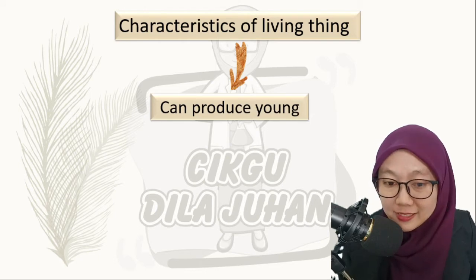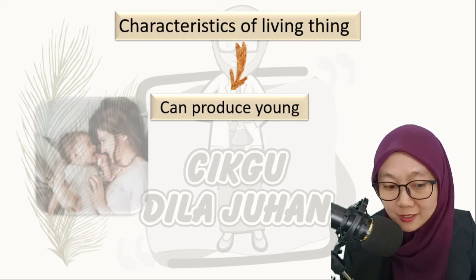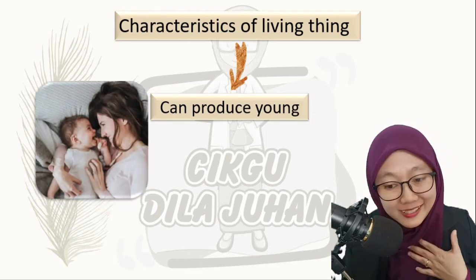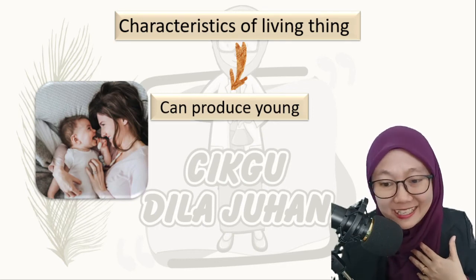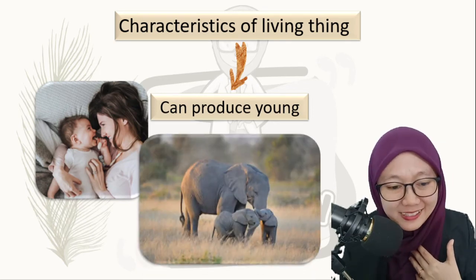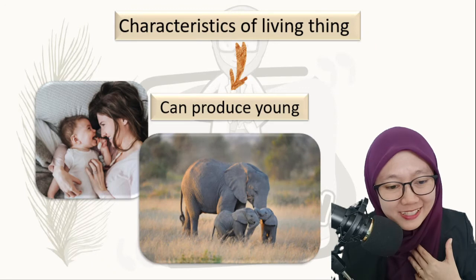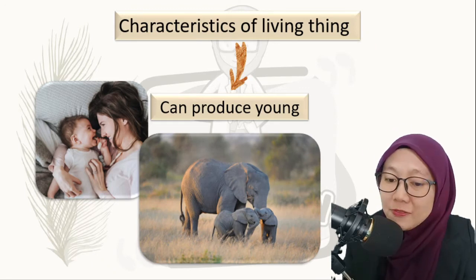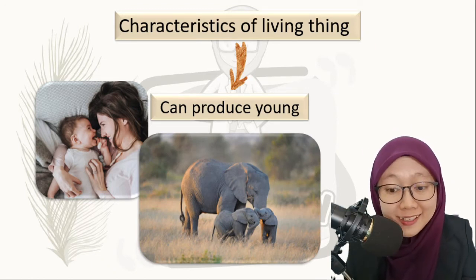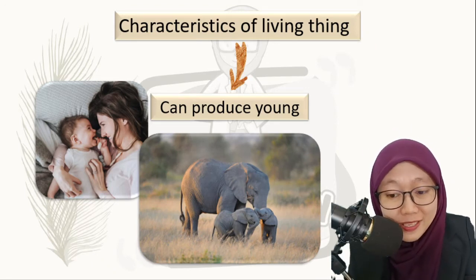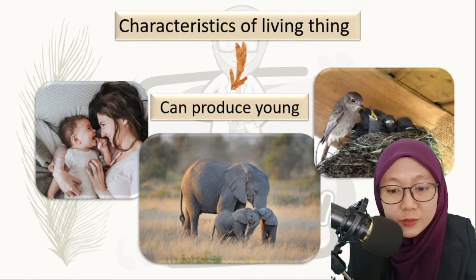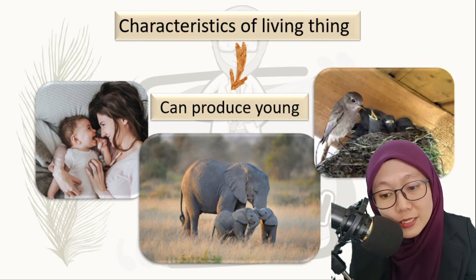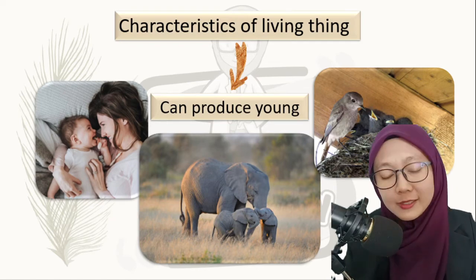Another characteristic of living things is that living things can produce young. Like me — I also can produce young, I can have a baby. Like these elephants — elephants can produce young, there is a baby elephant. Birds also can produce young, and same goes for plants — plants also can produce young.